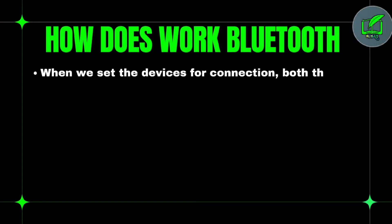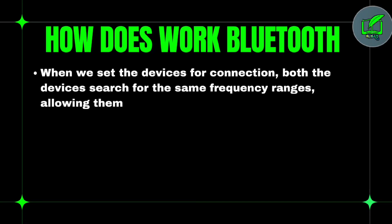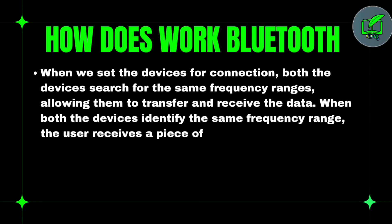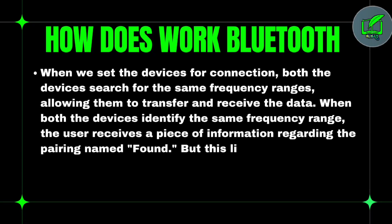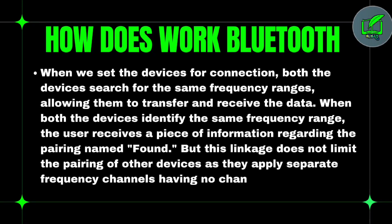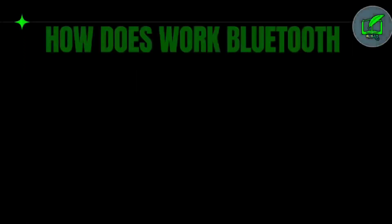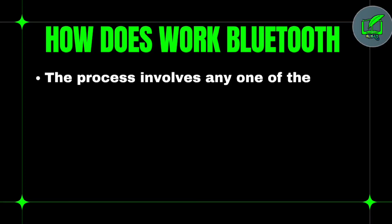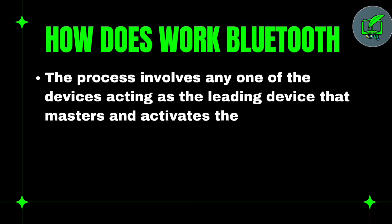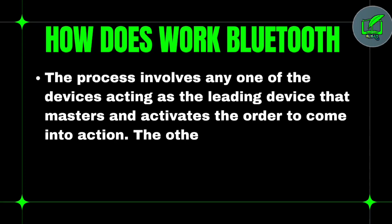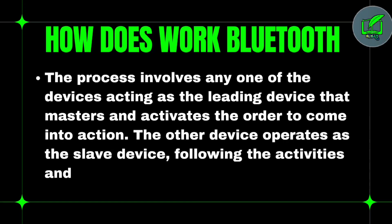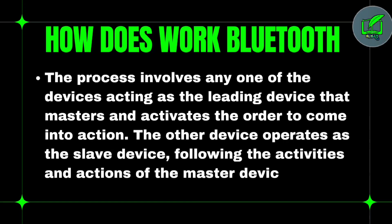When we set the devices for connection, both devices search for the same frequency range, allowing them to transfer and receive data. When both devices identify the same frequency range, they read the pairing name found. Devices apply separate frequency channels, reducing the chance of overlapping. The process involves one device acting as the master device that meters and activates the other devices. The other devices operate as slave devices, following the activities and actions of the master device.